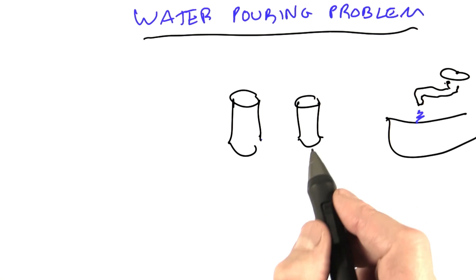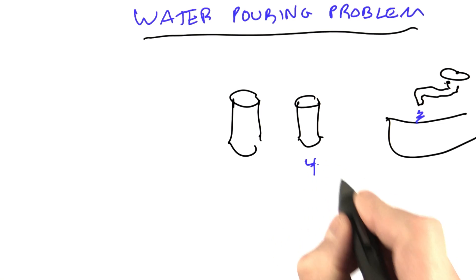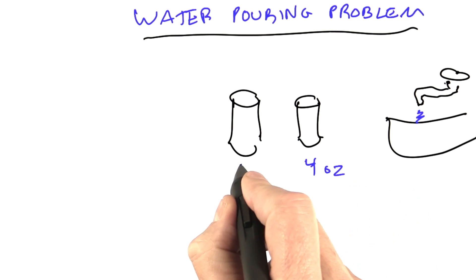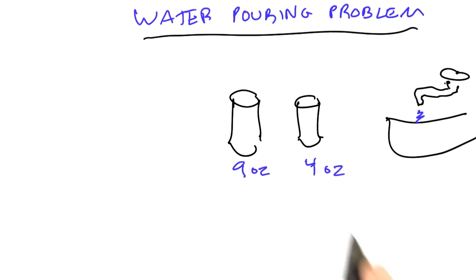Now, these glasses are of different sizes. I haven't drawn them that much different, but this one is 4 ounces and this one is 9 ounces. For those of you in the rest of the world besides the US, an ounce is about 30 milliliters.